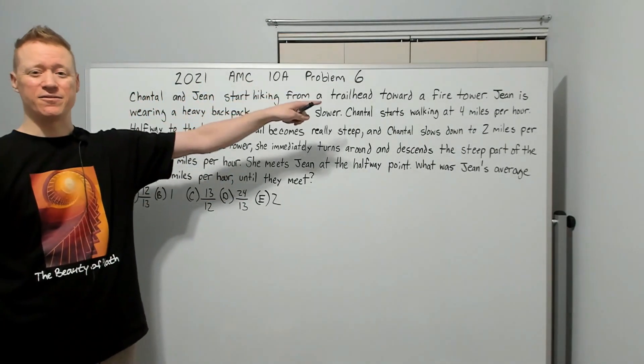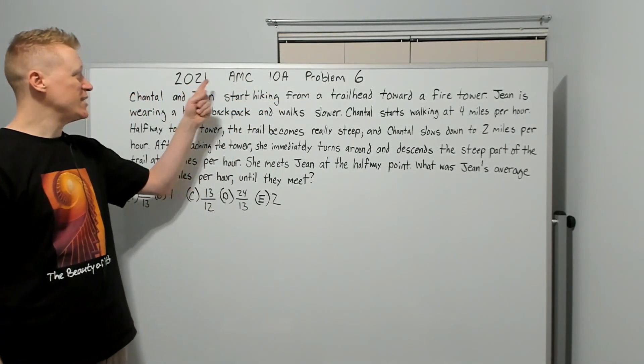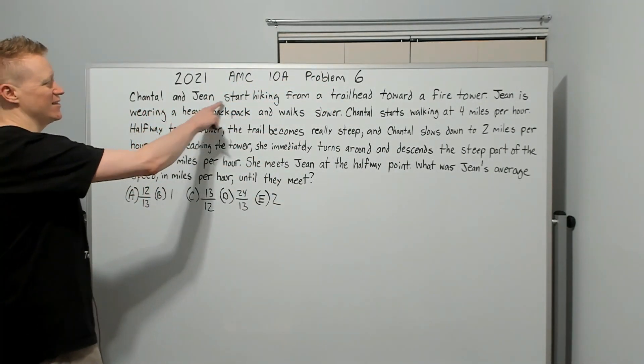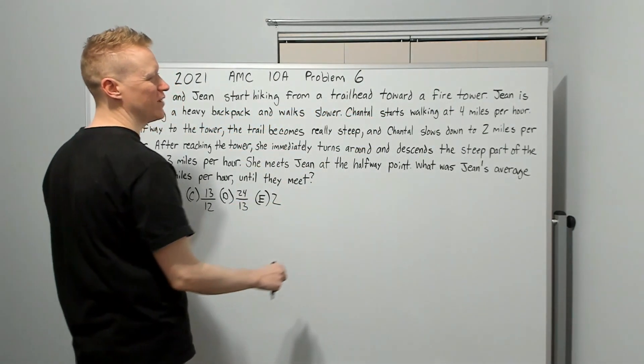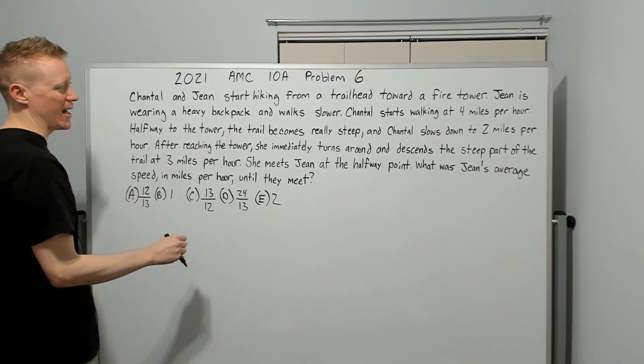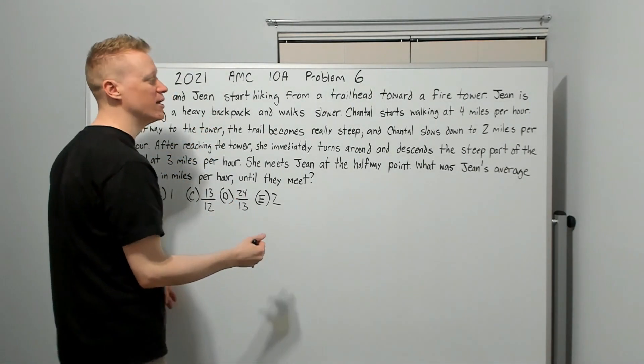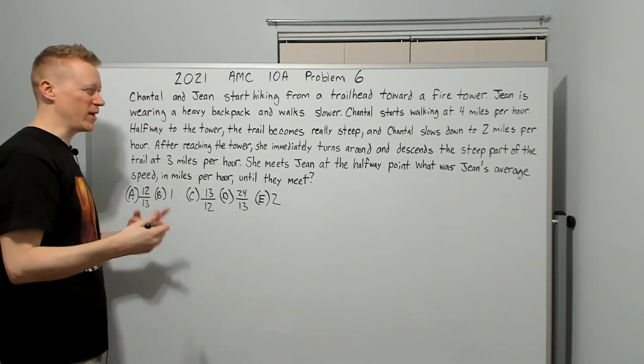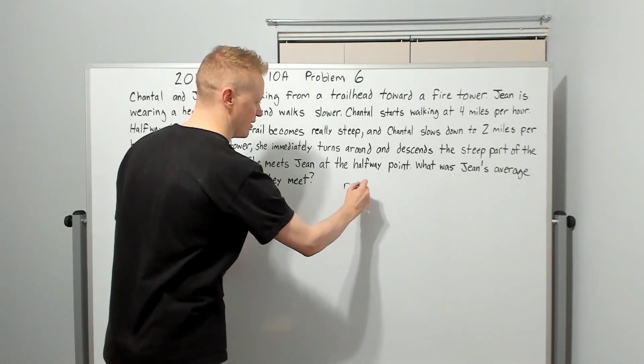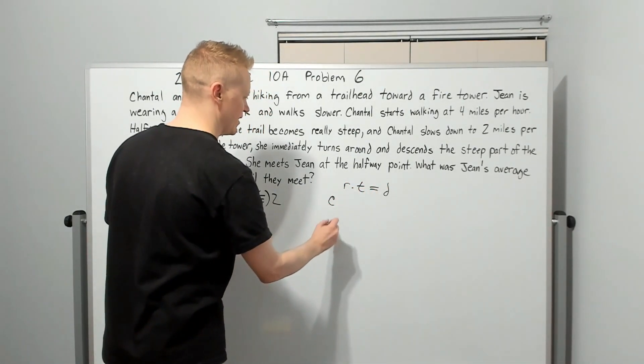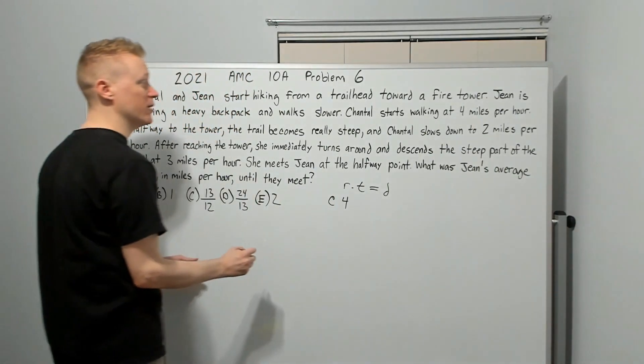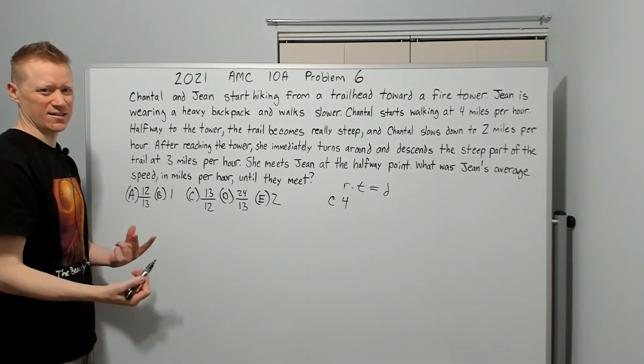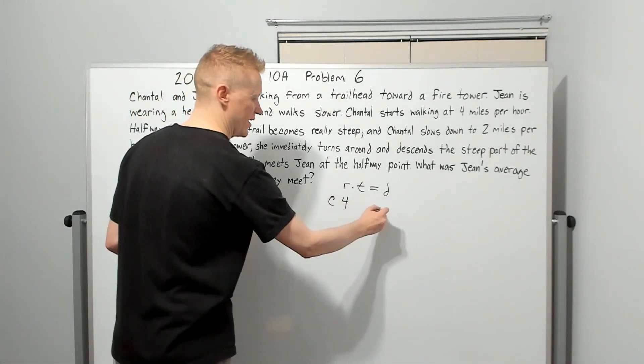This is the first problem of this set of five problems for the 2021 AMC 10A. It is problem number six. Chantel and Jean start hiking from a trailhead toward a fire tower. Jean is wearing a heavy backpack and walks slower. Chantel starts walking at four miles per hour. What rates? It's probably going to be rate times time equals distance. So we've got Chantel starting off at four. Halfway to the tower, we don't know the distance. We just know it's halfway to the tower. Let's just call that a distance of D.